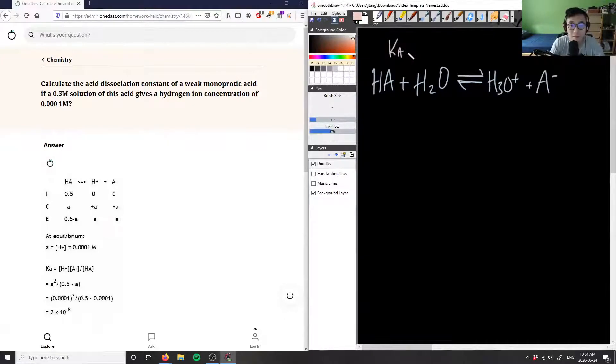In order for us to do that, we want to create an ICE table because we know this is in equilibrium. We have our initial concentration, so we're going to create an ICE table. ICE table stands for initial, change, and equilibrium.